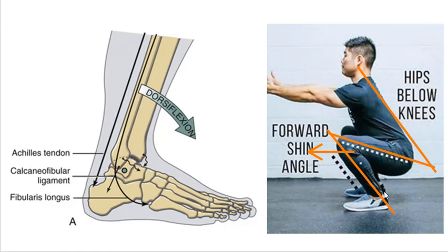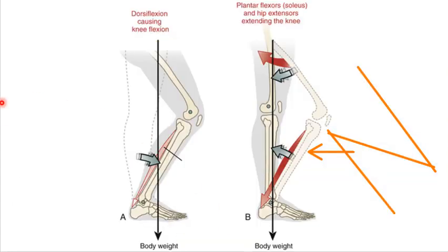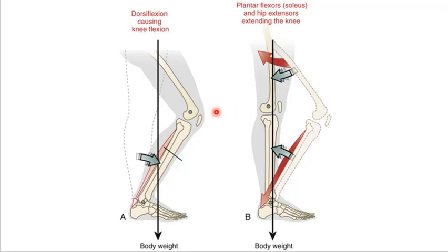Dorsiflexion and plantarflexion are agonist movements for the squat — it's not just glutes and hamstrings working. When you initiate the squat, your plantarflexors are working to control knee flexion. As you come up, your plantarflexors are agonists pulling that leg back in closed chain. You're technically working gastrocnemius and soleus — your calf muscles — when doing squats, as part of that triple extension: hip extension, knee extension, and ankle plantarflexion.